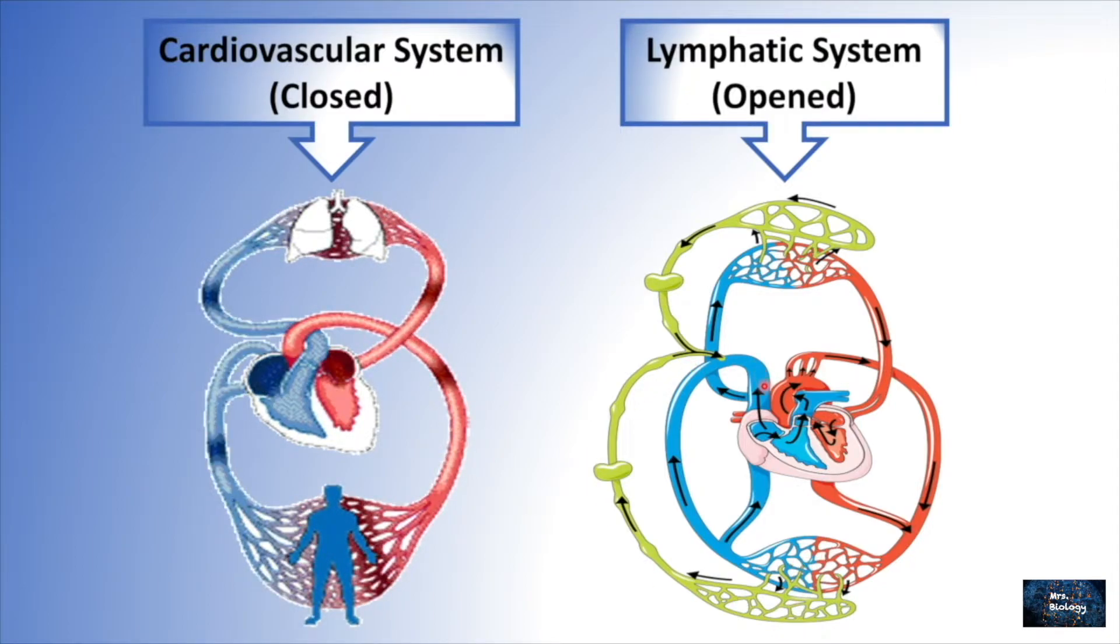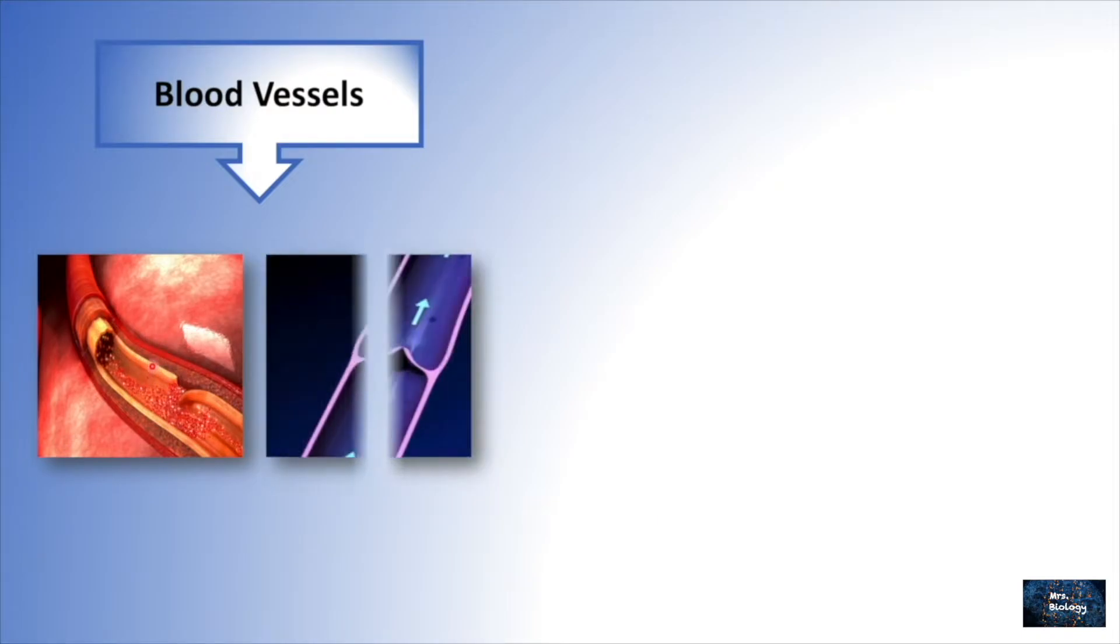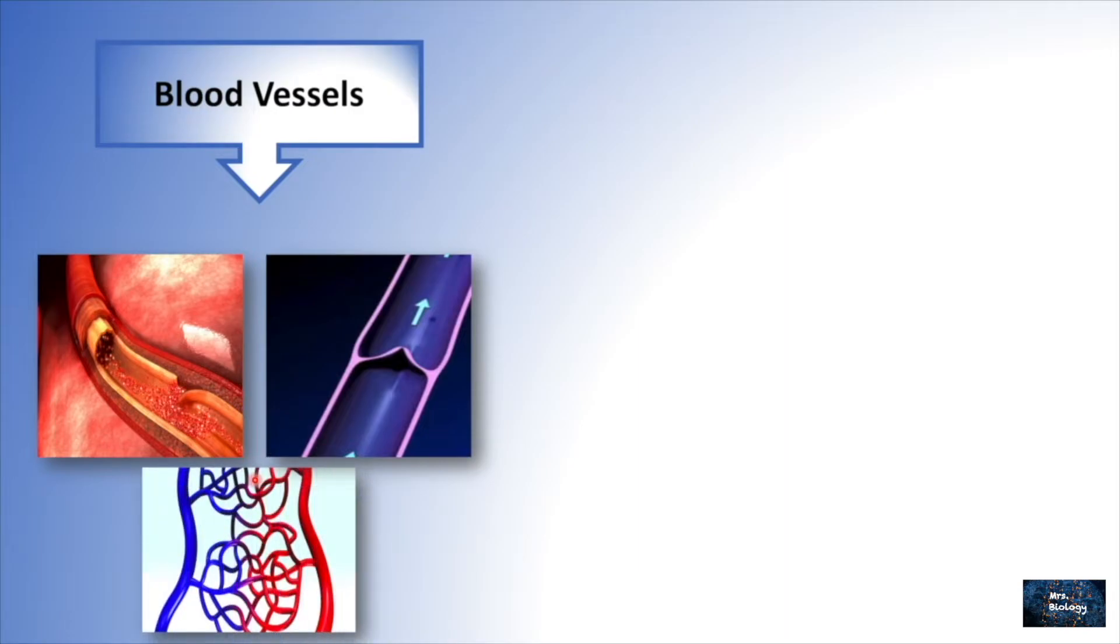Now the vessels in the cardiovascular system: there are three types of blood vessels. The first one, the arteries, which carry the oxygenated blood away from the heart. The second one, veins, which carry the deoxygenated blood from the body back toward the heart. The third one, capillaries, where the exchange of water, nutrients, and chemicals between the blood and the body tissues occurs.